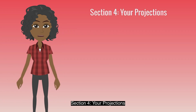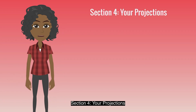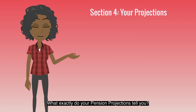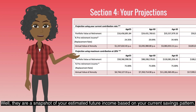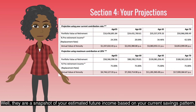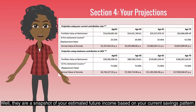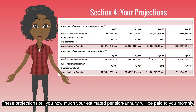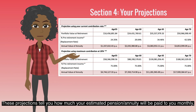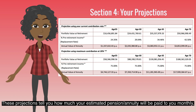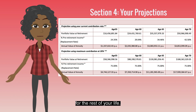Section 4: your projections. What exactly do your pension projections tell you? Well, they're a snapshot of your estimated future income based on your current savings pattern. These projections tell you how much your estimated pension or annuity will be paid to you monthly for the rest of your life.